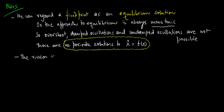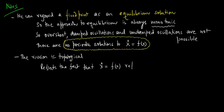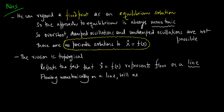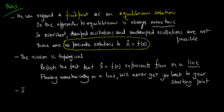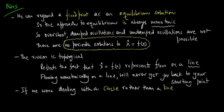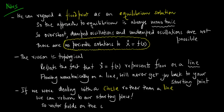The reason is in fact topological. It reflects the fact that x dot is equal to f of x represents a flow on a line. Flowing monotonically on a line will never get you back to your starting point. If we were dealing with a circle rather than a line, then we can return to our starting place. In that sense, vector fields on the circle can actually exhibit periodic solutions.